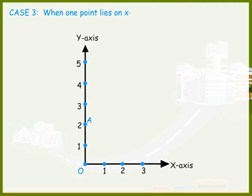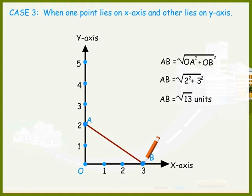Consider the third case when the two points, say A and B, lie on different coordinate axes. Applying Pythagoras theorem in triangle OAB, we obtain the distance AB equal to square root 13 units.